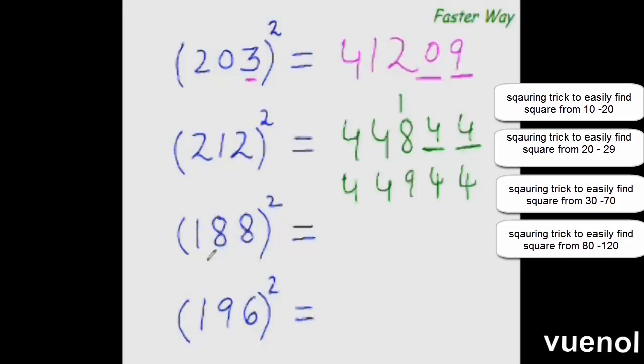Now find the square of 188 quickly, tell me the answer. 188 is 12 less than the base 200. So immediately subtract that 12 from 188. It would be 176. And double of 176 is 352.